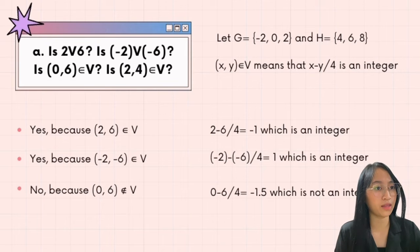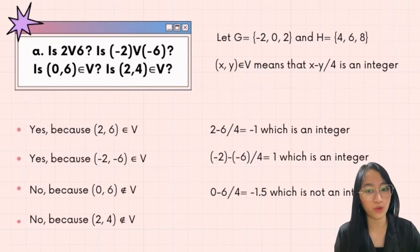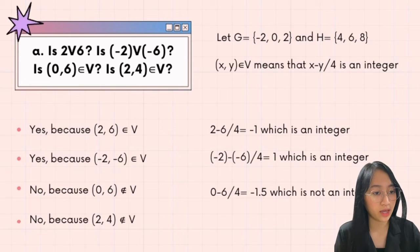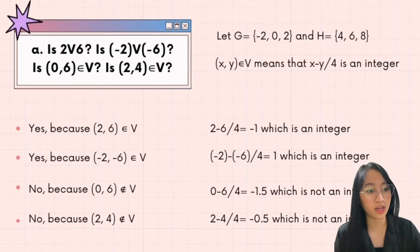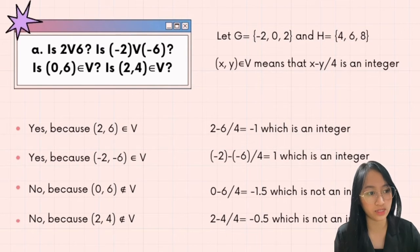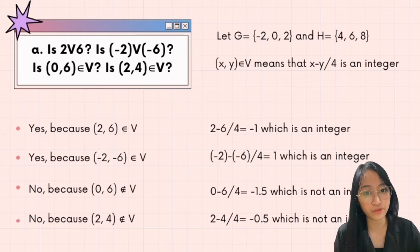For the fourth question: is (2, 4) an element of relation V? The answer is no, because (2, 4) is not an element of relation V. 2 minus 4 over 4 equals negative 0.5, which is not an integer.